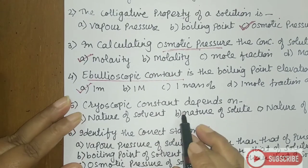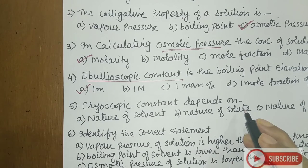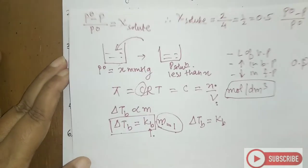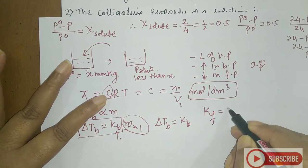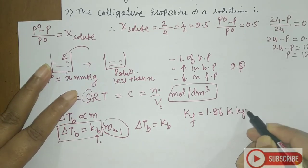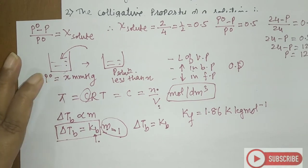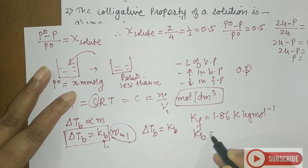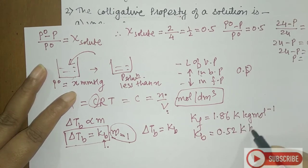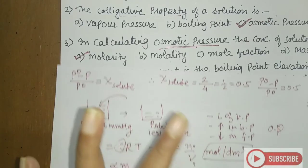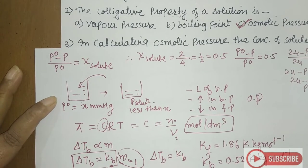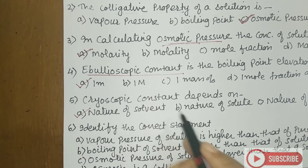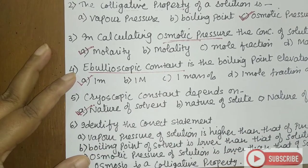Cryoscopic constant depends on the nature of the solvent — it is a characteristic of the solvent. The cryoscopic constant for water is always 1.86 K·kg·mol⁻¹. Similarly, the ebullioscopic constant of water is 0.52 K·kg·mol⁻¹. These values only change when the nature of the solvent changes. So cryoscopic constant depends only on the nature of the solvent.